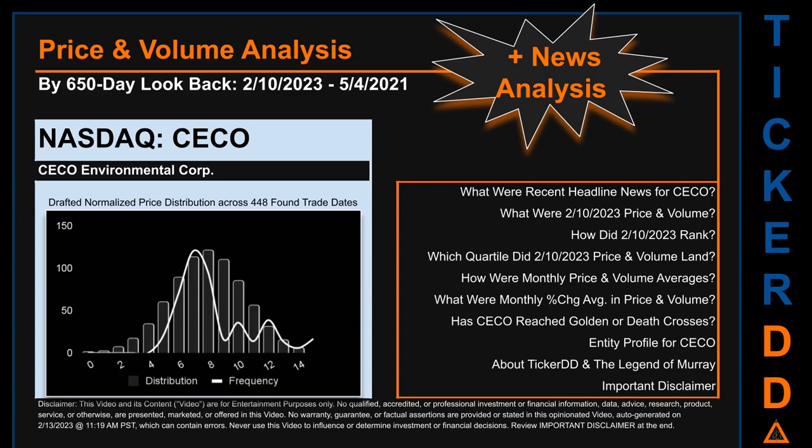Now that we have made our lawyers happy, capitalist brothers and sisters, let's get started. CECO went public on December 2, 1980, which was roughly 42 years and two months ago. Looking back 650 calendar days from Friday, February 10, 2023 to Tuesday, May 4, 2021, we found 448 applicable trade dates for use in our analysis. The chart shown on this page is our initial attempt at studying the price for CECO after dynamically normalizing price distribution across those discovered trade dates.